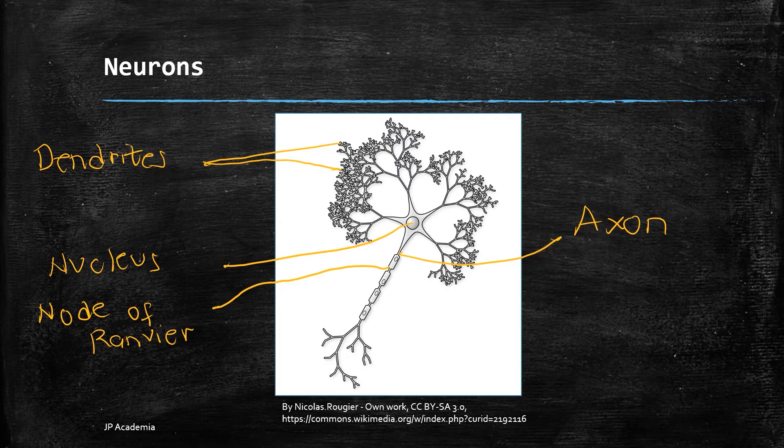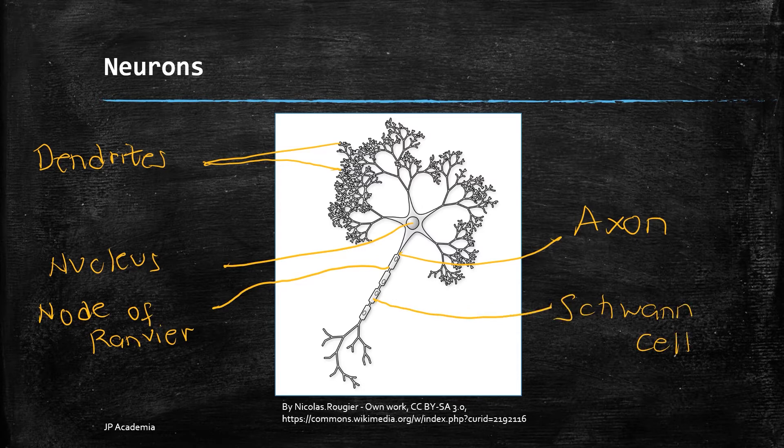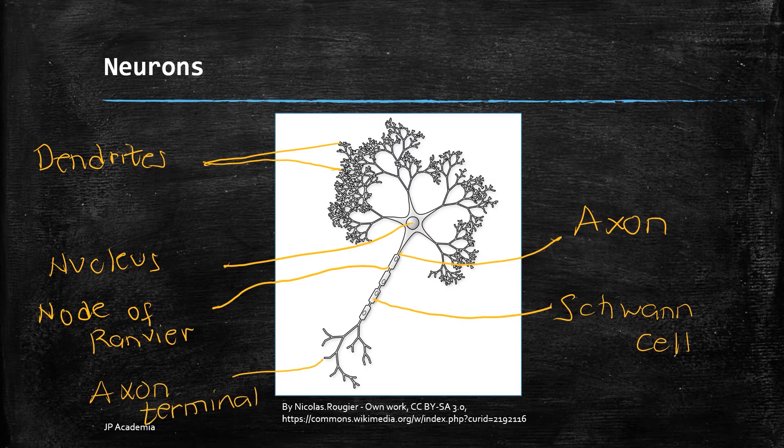Then next, fourth, we have the node of Ranvier. These are the gaps observed along the axons that allow diffusion of ions, important later when we talk about the electrical potential of our axon. Next, we have the myelin sheath. This is a fatty material that increases the speed of the signal. This sheet is produced by the Schwann cell located also near it. Then we have the axon terminal. This forms junctions with other cells.